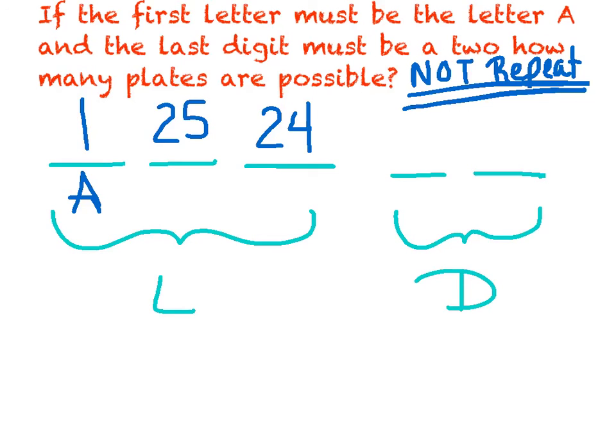Now, in digit-wise, they said the last digit has to be the number 2. So I only have one option to put there. Now, if that last digit's a 2, that means I've already used a number. And since I can't repeat, I only have 9 options for this first number. And again, I'm just going to multiply to get my total amount.